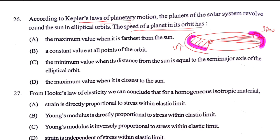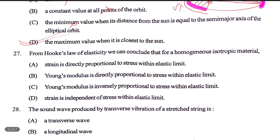This is a minimum value. The maximum value occurs when the planet is farthest from the sun. The speed has a constant value — minimum when it is farthest from the sun, and maximum when it is closest to the sun, along the semi-major axis.